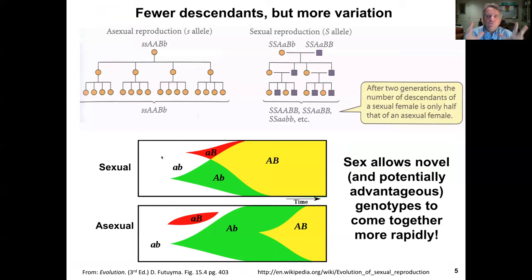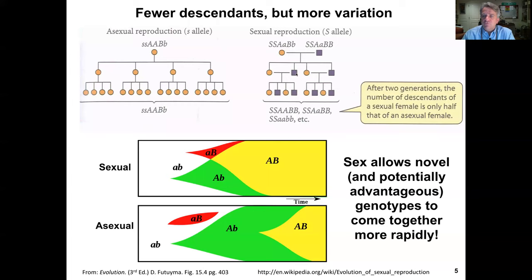So why don't we see widespread asexual reproduction given these costs? It comes down to the fact that sexual reproduction produces fewer descendants but much more genetic variation. With asexual reproduction, we have the same parental genotype essentially fixed across generations, whereas with sexual reproduction we generate many more genotypes relative to the ancestral or parental genotypes.